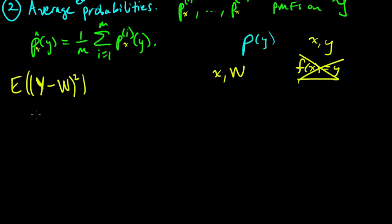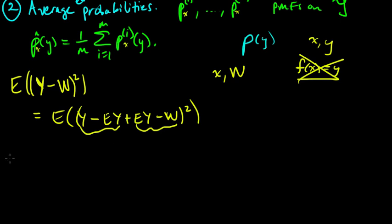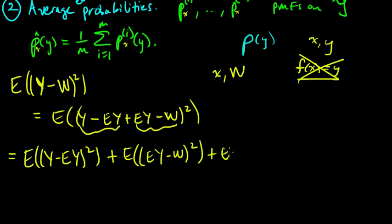And now, let's see what we can say. So this we can write as, so we can add and subtract the expected value of Y. And if we group the first part and the second part, and we multiply this out, what do we get? So we get the expected value of Y minus its expected value squared. We get the square of this part, and then we get two times their product.